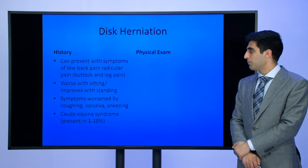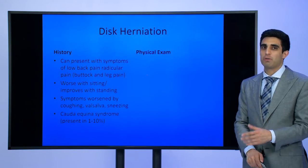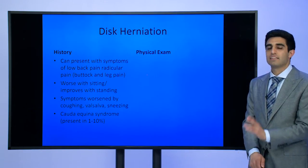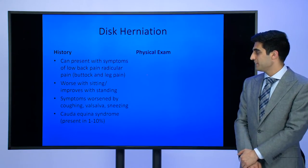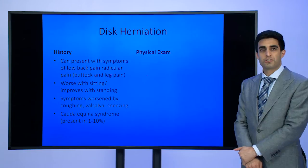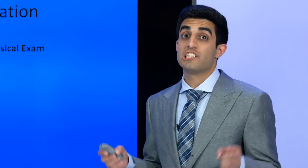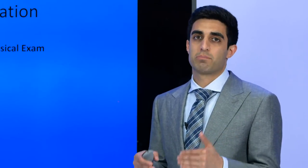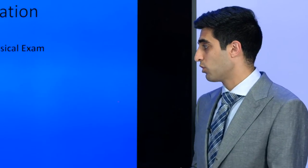Disc herniation can present with symptoms of low back pain and radicular pain — pain into the buttock or leg, and sometimes both legs. It is generally worse with sitting and improves with standing, and is worsened by coughing, straining, or sneezing. The dangerous presentation is cauda equina syndrome, which occurs in under 10% of patients, where a very large disc herniation compresses most of the spinal nerves in the lumbar spine, causing serious weakness and potentially irreversible bowel and bladder incontinence — one of the emergent diagnoses a spine surgeon watches for.